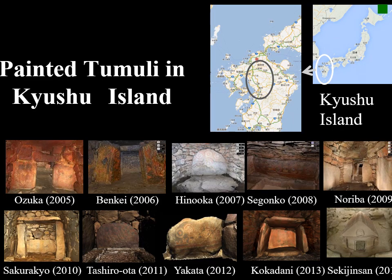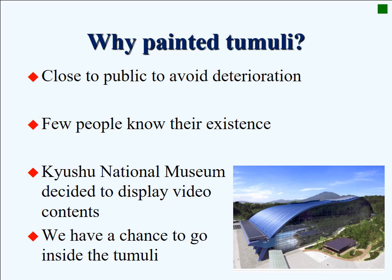Another example of cyber archaeology is our Kyushu project. In Kyushu, there are many painted tumuli. We have scanned 10 of them and created digital contents. The main reason why we conducted this project was that those tumuli are not open to the public, to avoid deterioration from human CO2. As a result, few people know of their existence. Thus, we decided to digitize representative ones and display them at Kyushu National Museum.